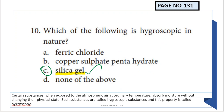Which of the following is hygroscopic in nature? A hygroscopic substance absorbs moisture from the air but changes state, not shape. The best example is silica gel - you find it in new bags or packages because it absorbs moisture. Option C, silica gel, is the answer.